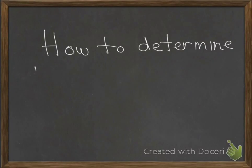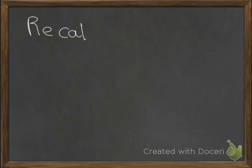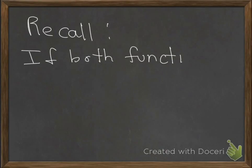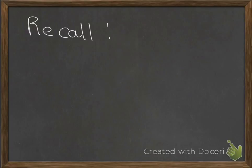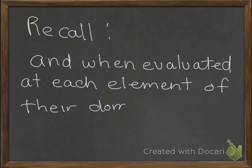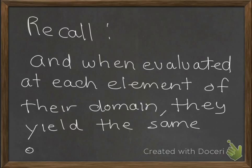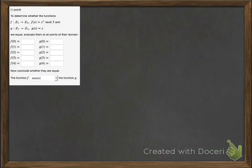How to evaluate if two functions are equal. Recall that if both functions have the same domain and the same codomain, and when we evaluate each function at each element of its domain it yields the same output, then the two functions are equal. Let's look at a problem from your homework: determine whether the two functions f and g are equal. Evaluate them at all points in their domain and conclude whether they are equal, choosing from the drop-down 'equal' or 'not equal'.